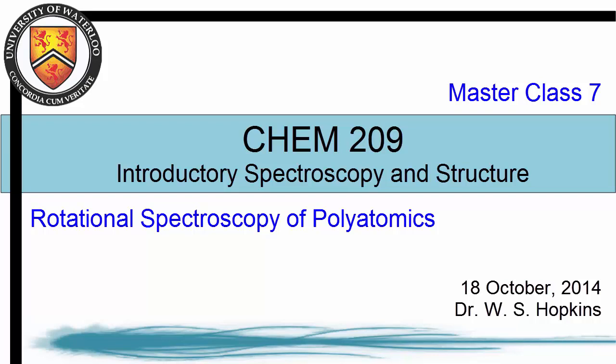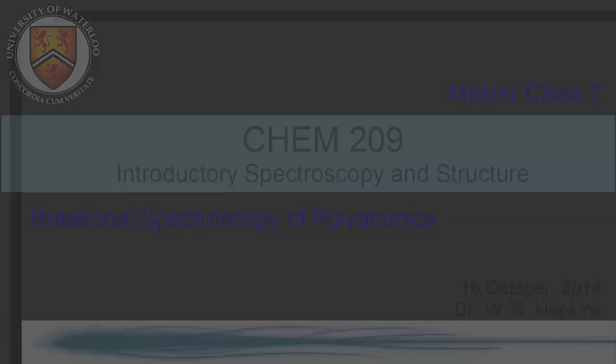Welcome to the Chemistry 209 Masterclass series. This series of lectures is intended to highlight the key concepts of introductory spectroscopy and structure. This lecture, Masterclass 7, discusses rotational spectroscopy of polyatomic species.